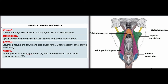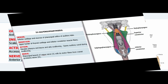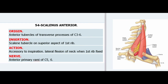53. Salpingopharyngeus. Origin: Inferior cartilage and mucosa of pharyngeal orifice of auditory tube. Insertion: Upper border of thyroid cartilage and inferior constrictor muscle fibers. Action: Elevates pharynx and larynx and aids swallowing; opens auditory canal during swallowing. Nerve: Pharyngeal branch of vagus nerve (X) with its motor fibers from cranial accessory nerve (XI).